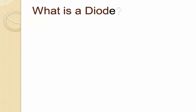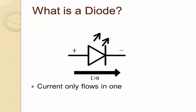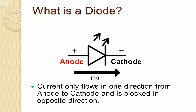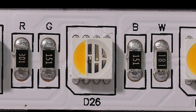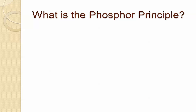So what is a diode? A diode is basically an electronic device that allows current to only flow in one direction — from the anode to the cathode — and is blocked in the opposite direction. If you try to go from the cathode to the anode, in other words negative to positive, the current is not going to flow.